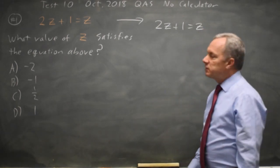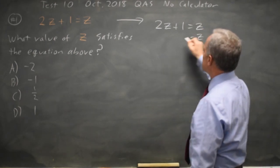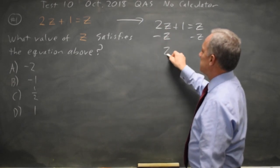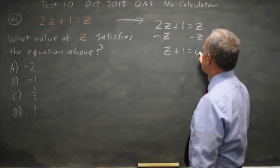To solve we're going to collect like terms, so I'm going to subtract z from both sides. 2z minus 1z is 1z, z plus 1 equals 0.